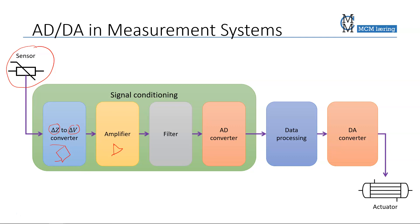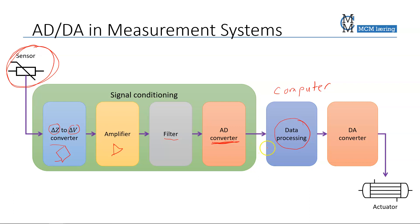Amplification is usually done by some kind of operational amplifier. In many cases we also filter the signal, which means that we remove undesired frequency components and keep other frequencies. Then we do the analog to digital conversion — the signal here is analog and we want to convert it to a digital signal in order to use it for data processing.